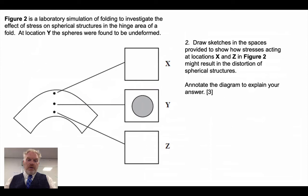The second part of the question looks at these spherical structures that we might find in the hinge area of a fold. You're asked to draw in what those shapes would look like after these beds have been folded. And crucially then, to annotate that diagram to explain your answers.